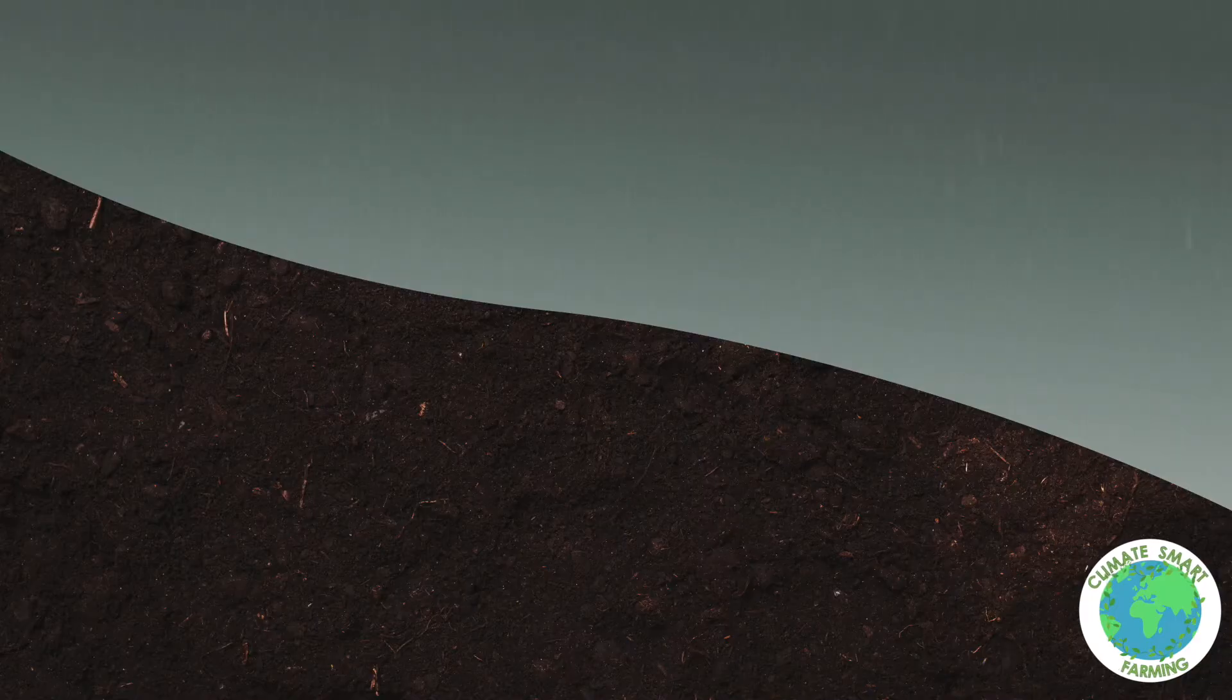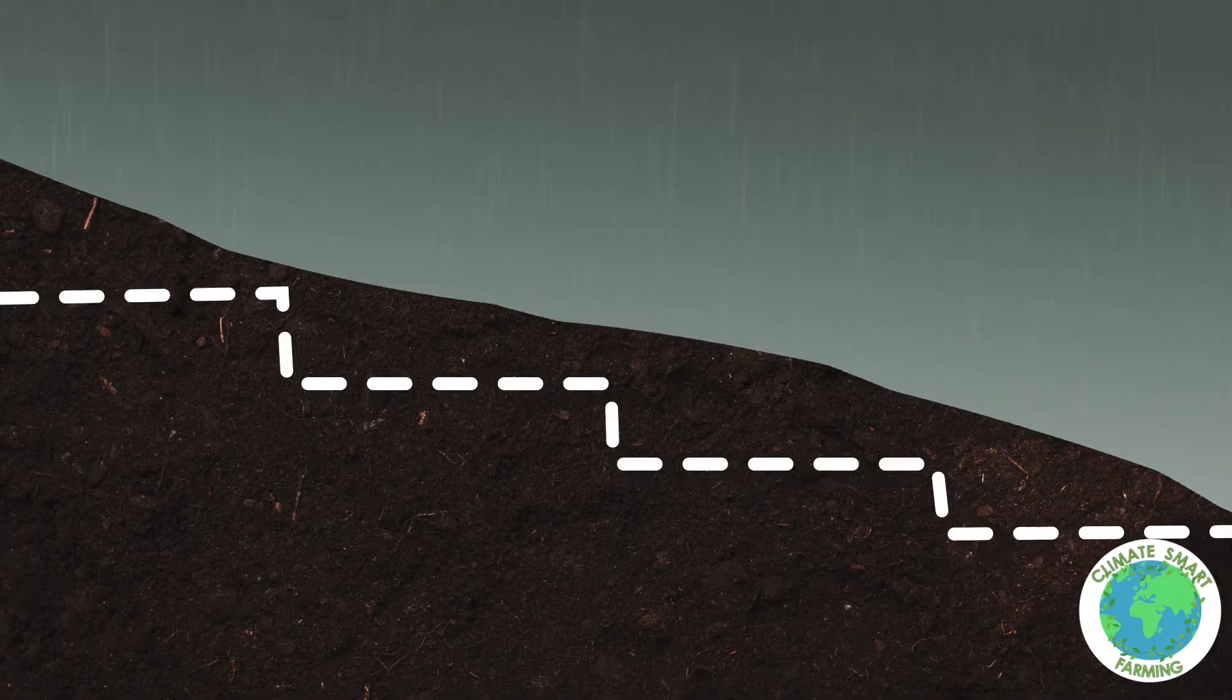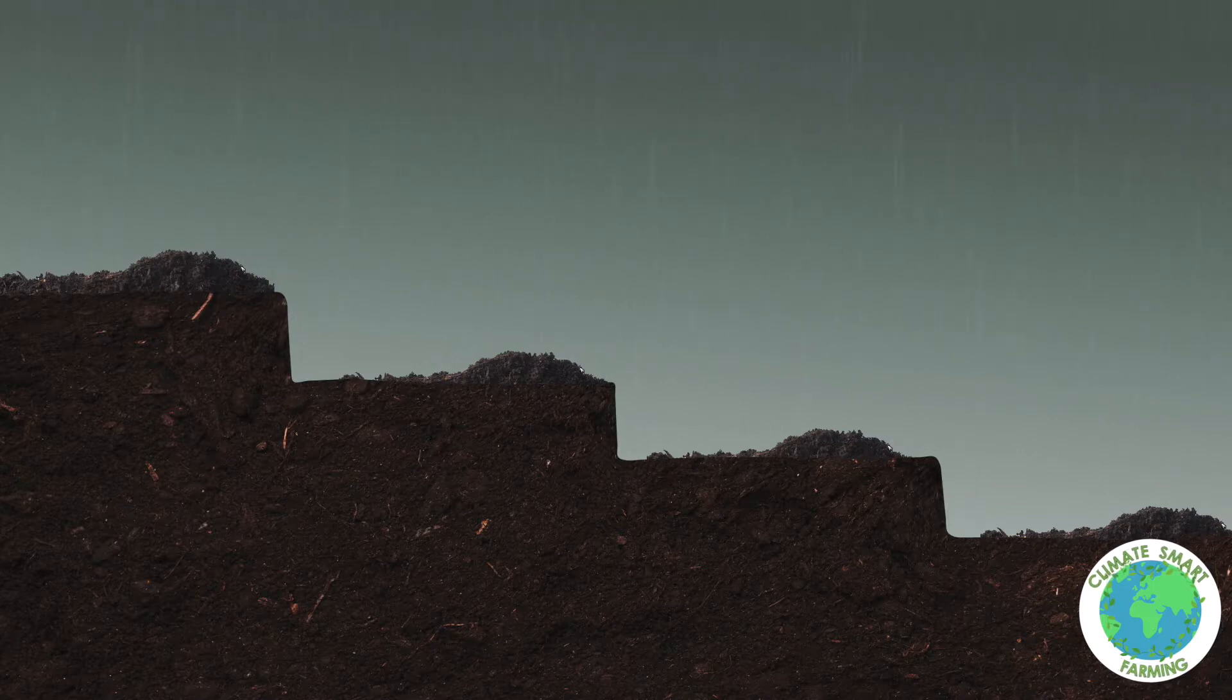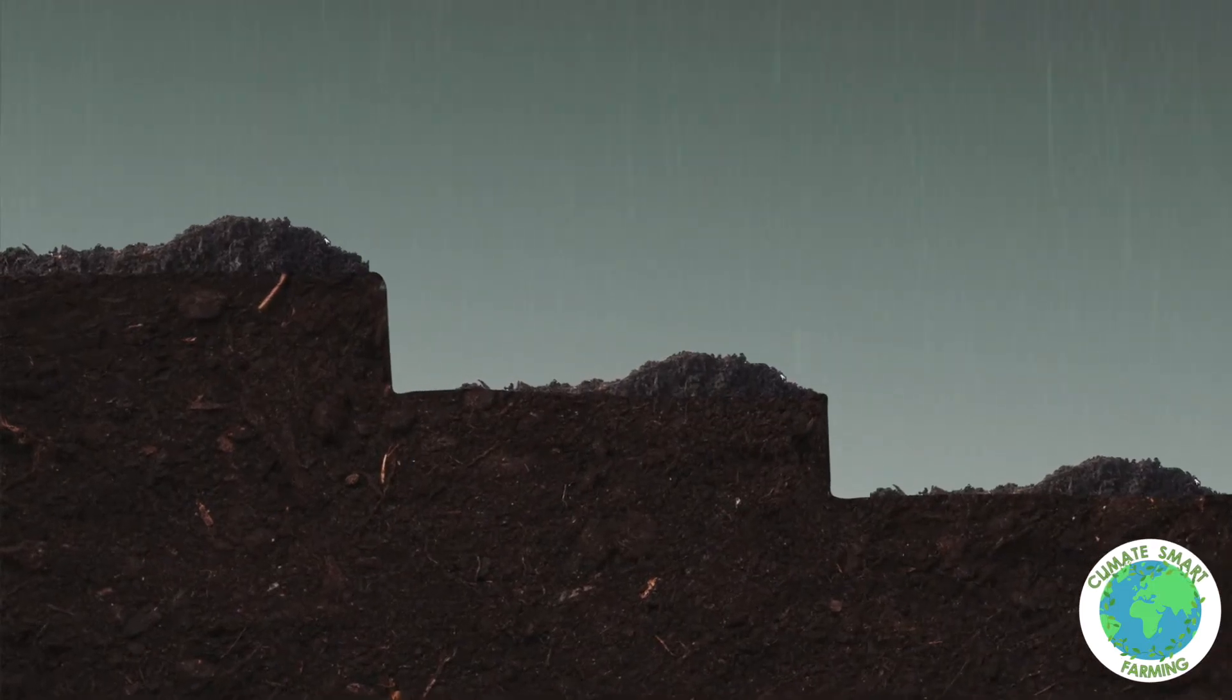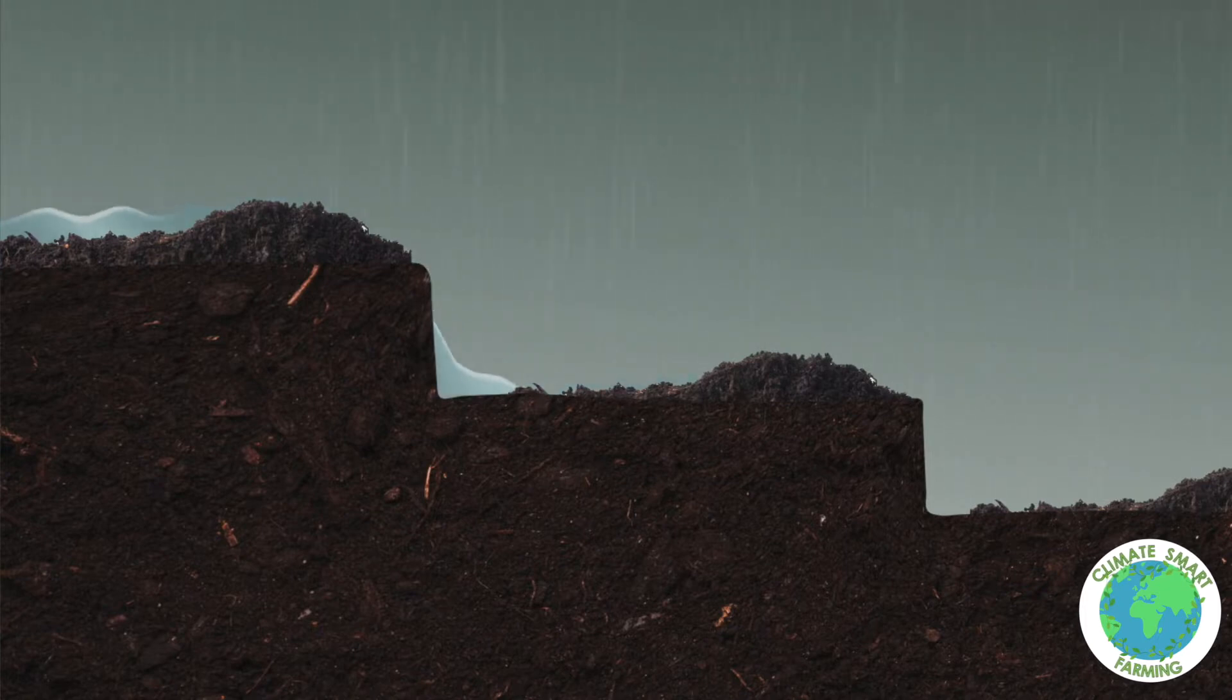To stop soil erosion, make terraces on the hillside. Make a trench along the contour and throw soil on the upper side. The soil on the upper side slows the run of water and lets it sink into the soil and stop soil being washed away.